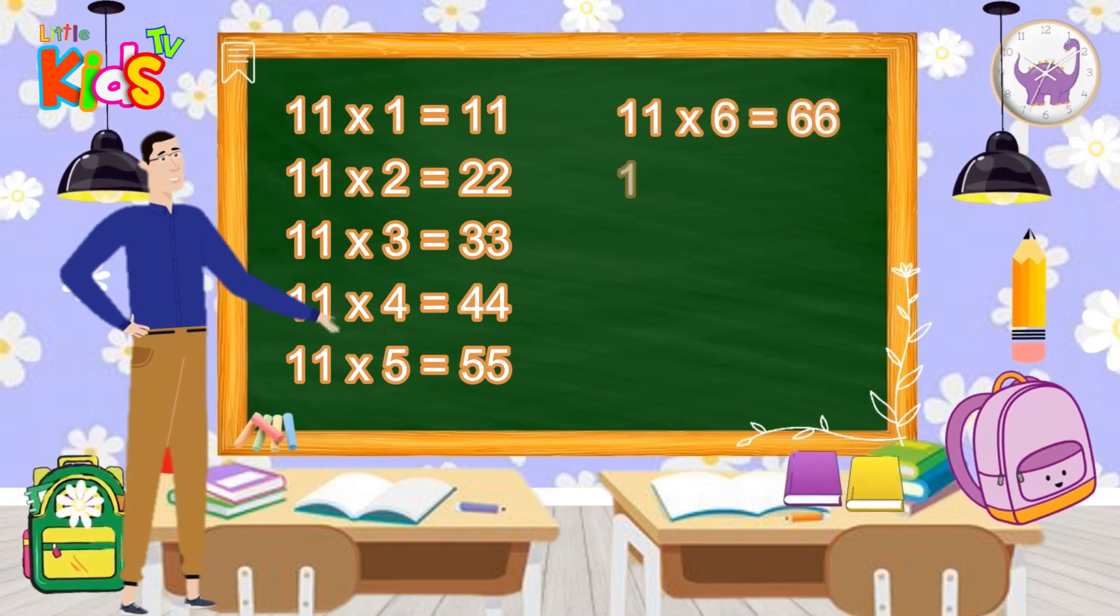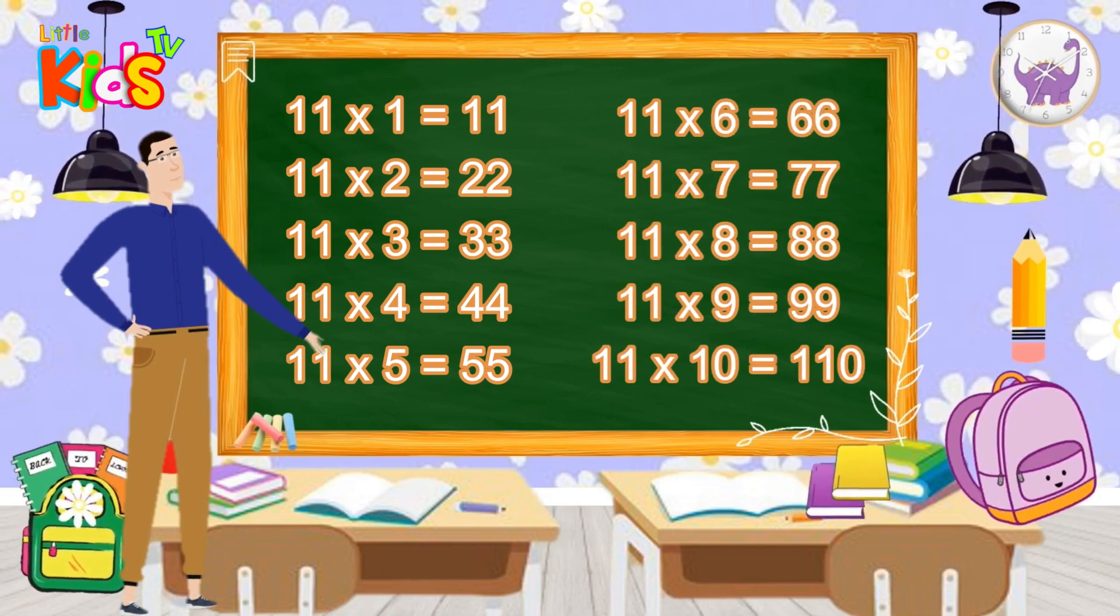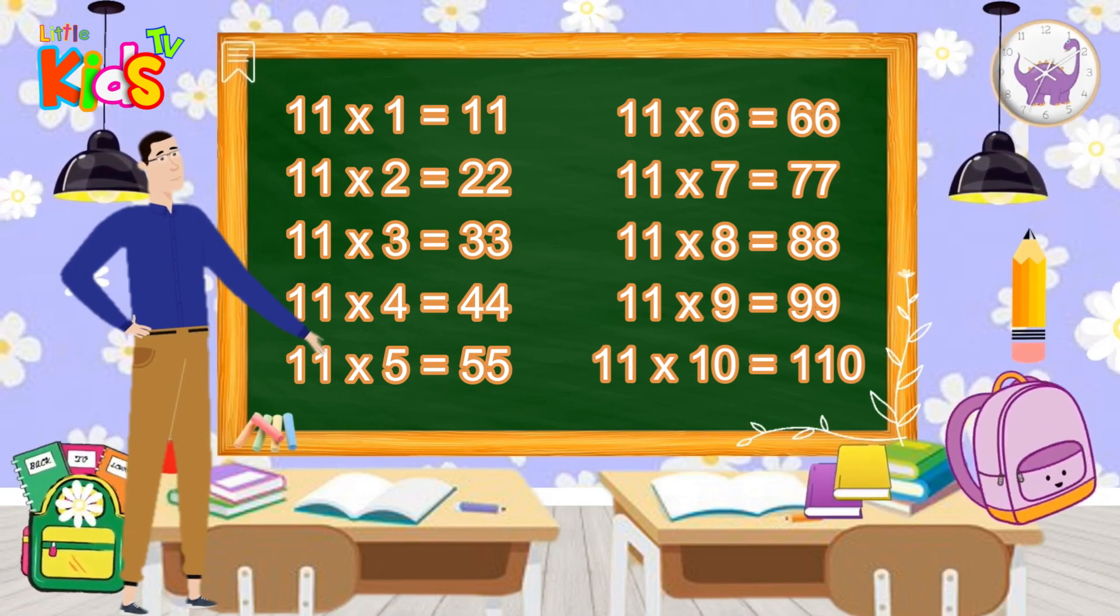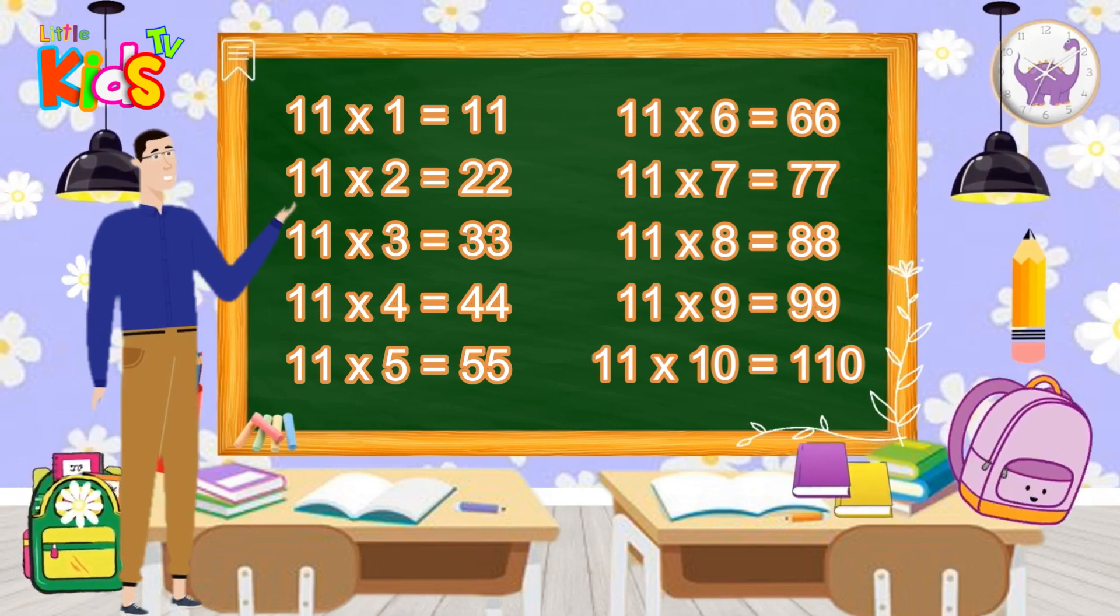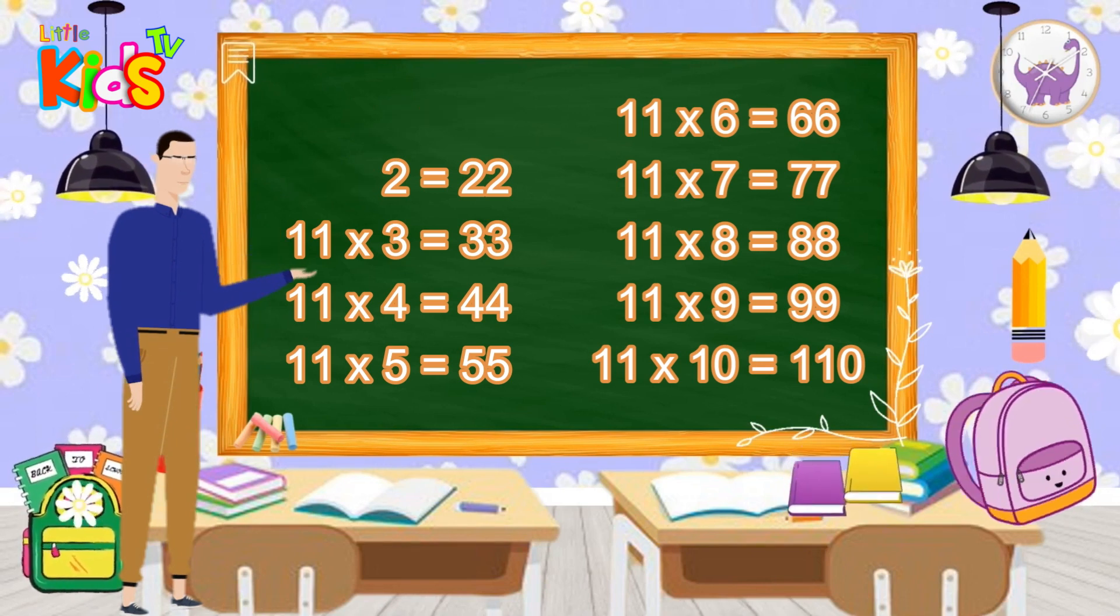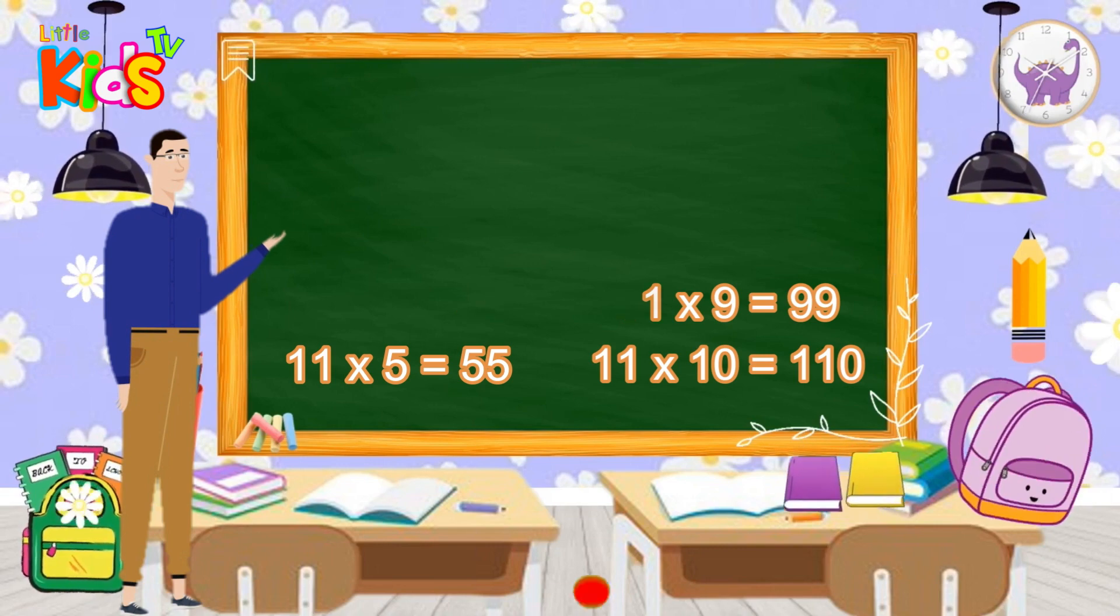11 6s are 66. 11 7s are 77. 11 8s are 88. 11 9s are 99. 11 10s are 110.